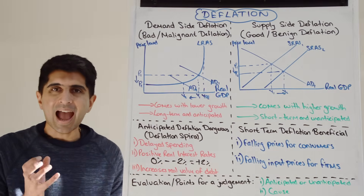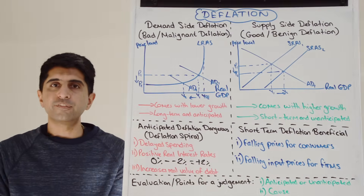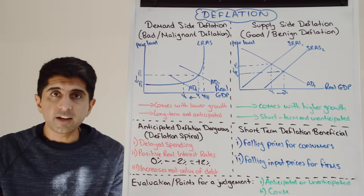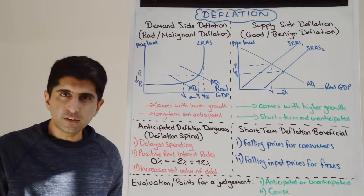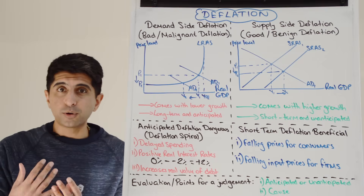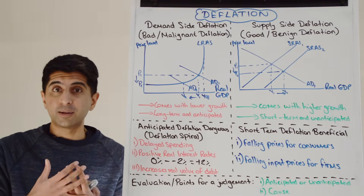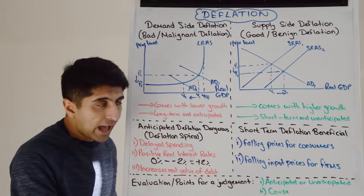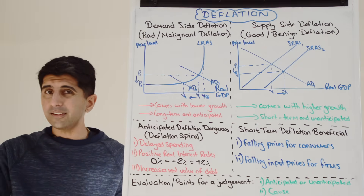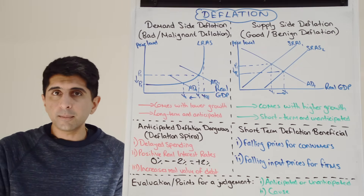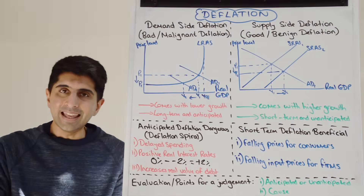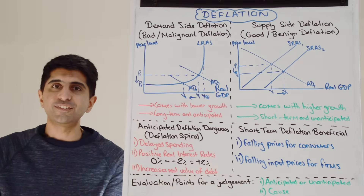Another major issue is that deflation increases the real value of debt. When prices are falling in the economy, profits for businesses and incomes for workers are going to be falling at the same time. Profits fall because firms are making less revenue, and also because consumers are delaying spending. Workers' incomes fall because firms are making less profit. Lower incomes can match the lower prices, so we expect profits and incomes to be falling.